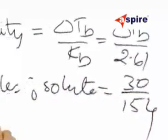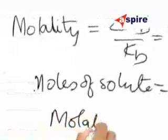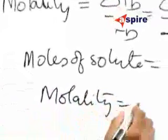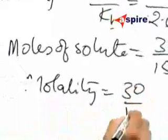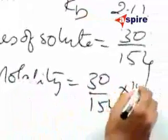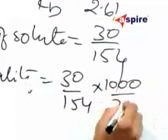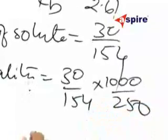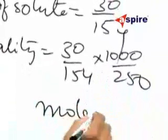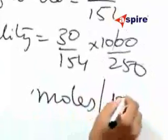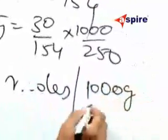And the molality value will now correspond to 30 by 154 into 1000 divided by 250. This is corresponding to the moles per 1000 gram of solvent.